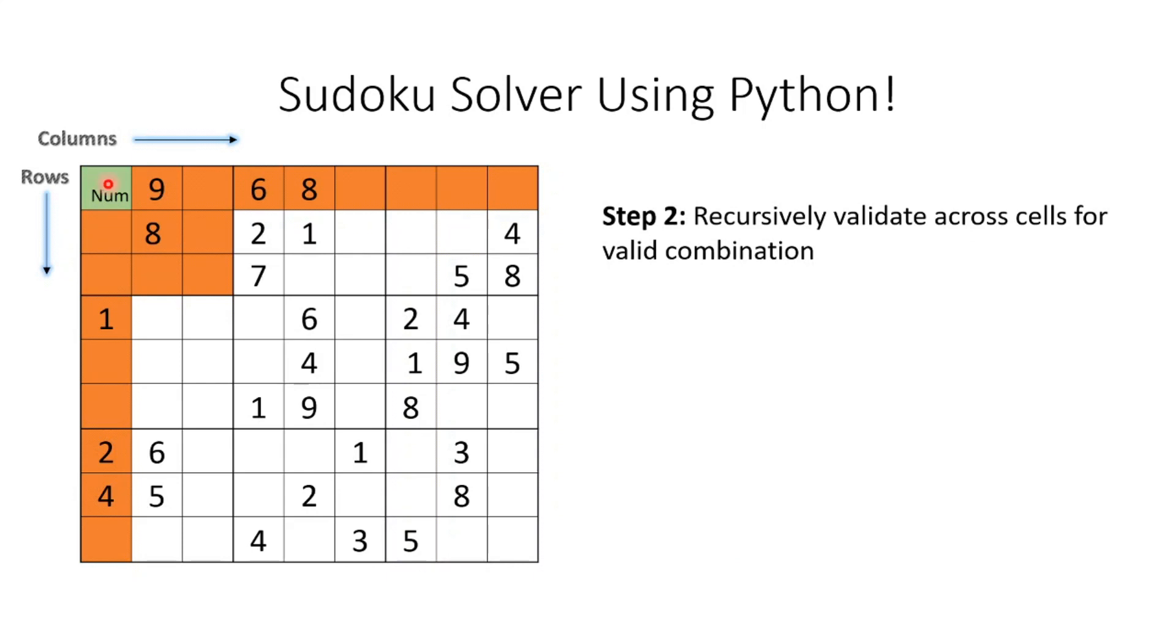As we saw earlier, based on the rule we defined, you can easily guess that the first number would be 3, because we iterate from 1 to 9 and 1 is already present, 2 is already present, so this value becomes 3. Then we move to the next cell, which is the third column.